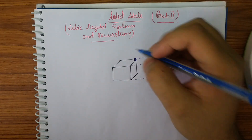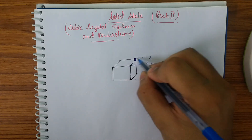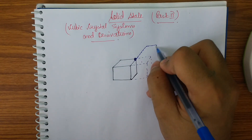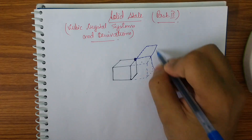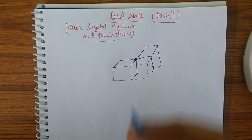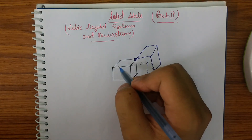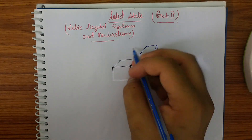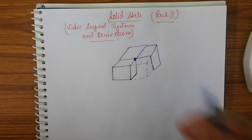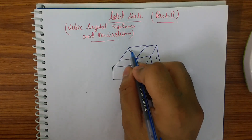Now another cube can be taken backwards of this cube, so I can get another cube here. There is no space between the cubes. Similarly, for the room I am staying in, I can take another adjacent room. So how many cubes am I getting till now? 1, 2, 3, and 4.